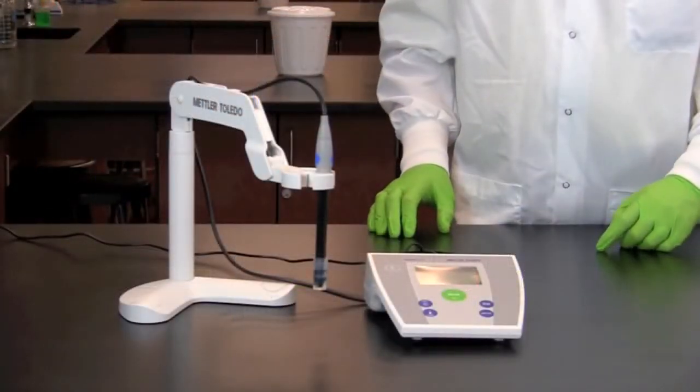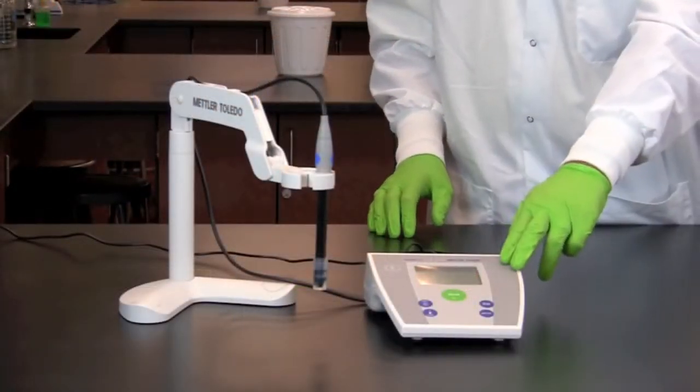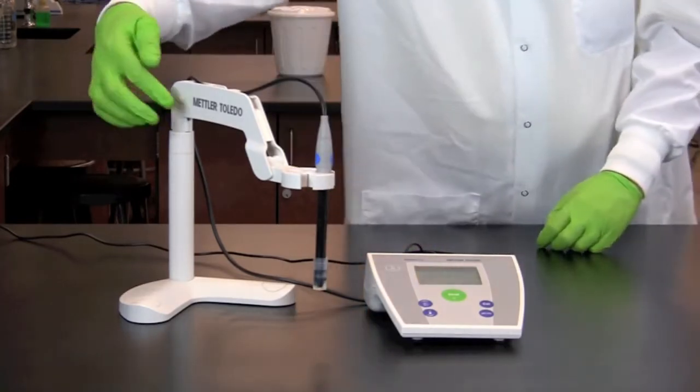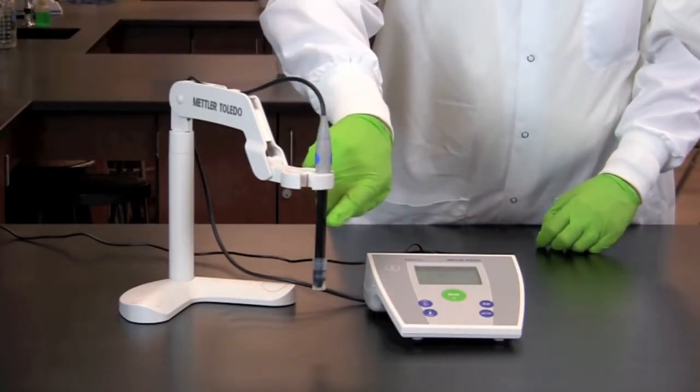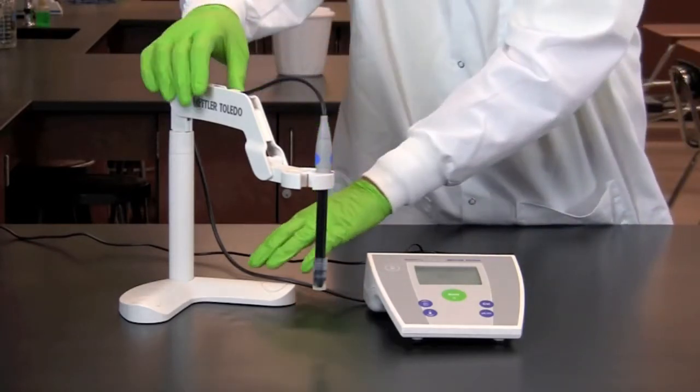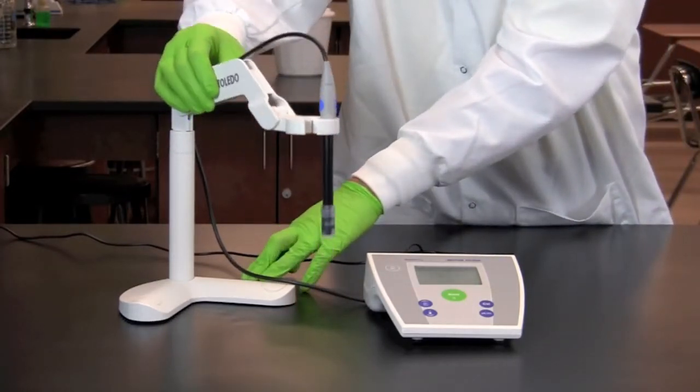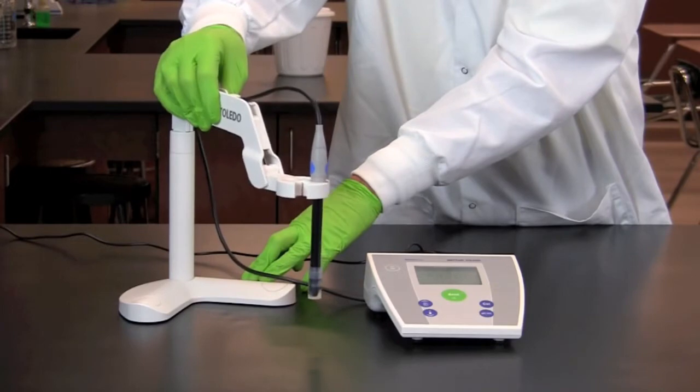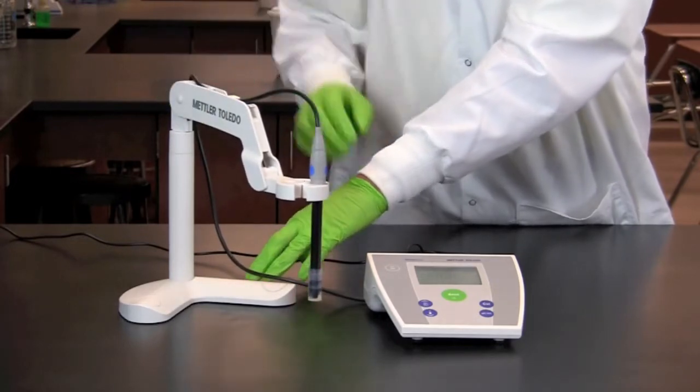The parts of a pH meter include the meter, the arm, and the electrode. The arm allows the electrode to be easily moved up and down into a beaker with a sample to be tested.